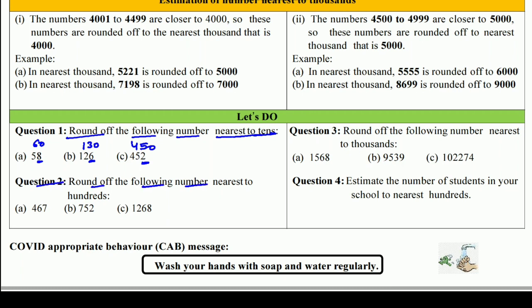Q2: Round off the following numbers nearest to hundreds. 100 में round off करने के लिए last के 2 digits देखते हैं — अगर 50 से कम है तो पहले वाले 100 पर, नहीं तो next वाले 100 पर। 467 में 67 है जो 50 से ज़्यादा है, तो 500. 752 में 52 है जो 50 से ज़्यादा है, तो 800. 1,257 में 57 है जो 50 से ज़्यादा है, तो 1300.